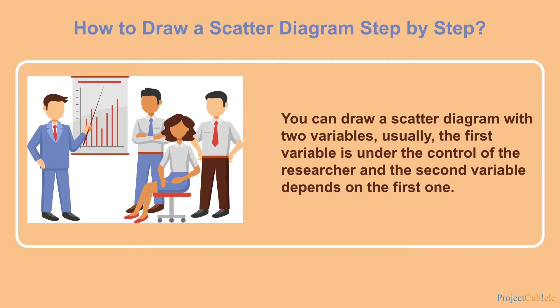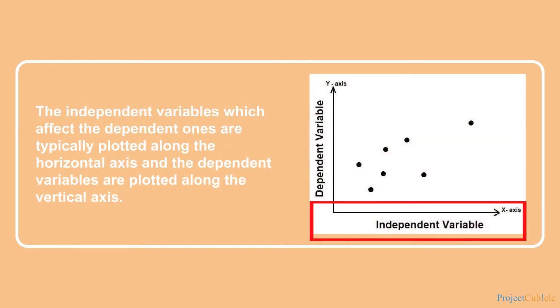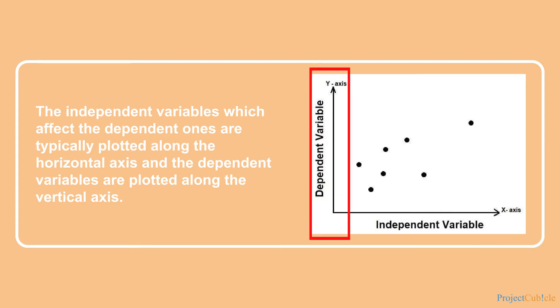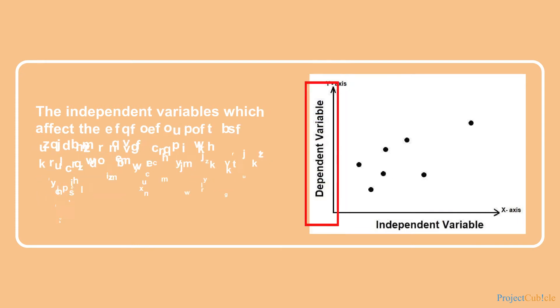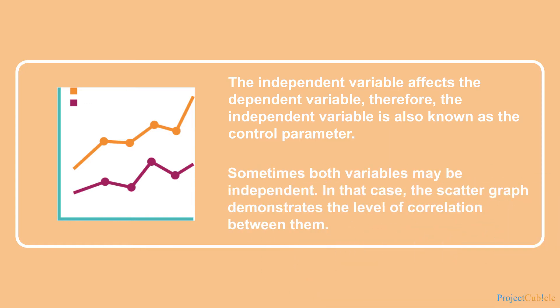You can draw a scatter diagram with two variables. Usually the first variable is under the control of the researcher and the second variable depends on the first one. The independent variables, which affect the dependent ones, are typically plotted along the horizontal axis and the dependent variables along the vertical axis. Sometimes both variables may be independent; in that case the scatter graph demonstrates the level of correlation between them — how closely the variables are related.